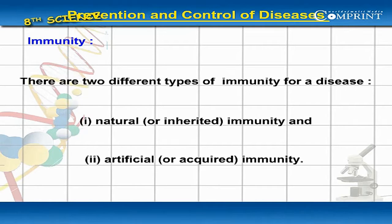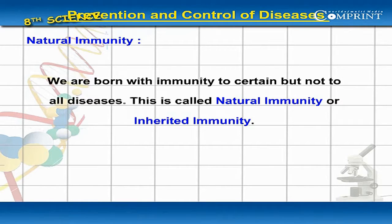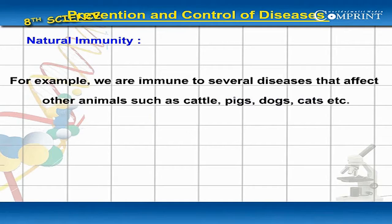Natural or Inherited Immunity: We are born with immunity to certain, but not all, diseases. This is called Natural Immunity or Inherited Immunity. For example, we are immune to several diseases that affect other animals such as cattle, pigs, dogs, cats, etc.